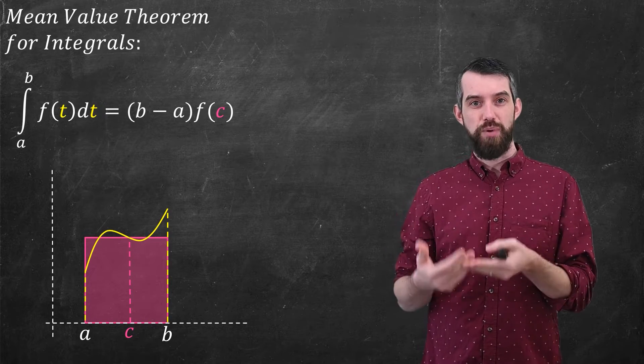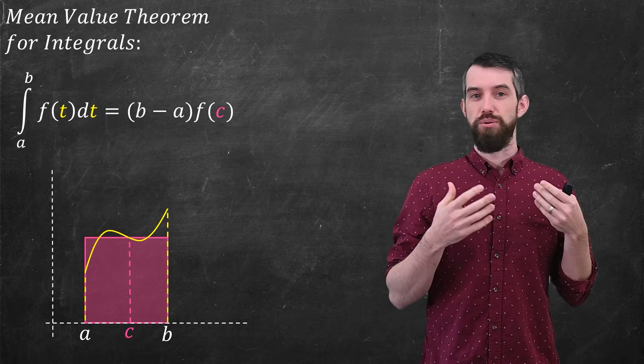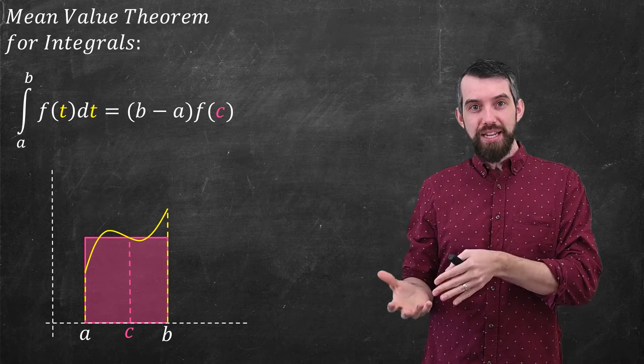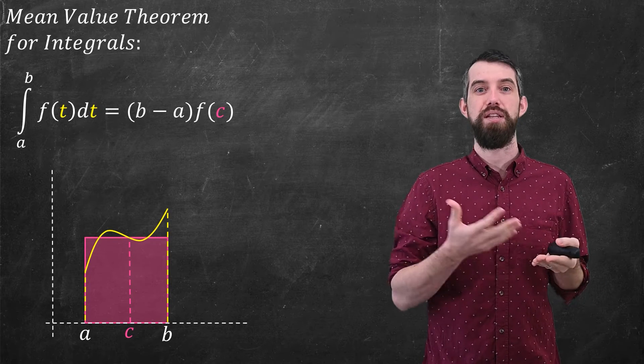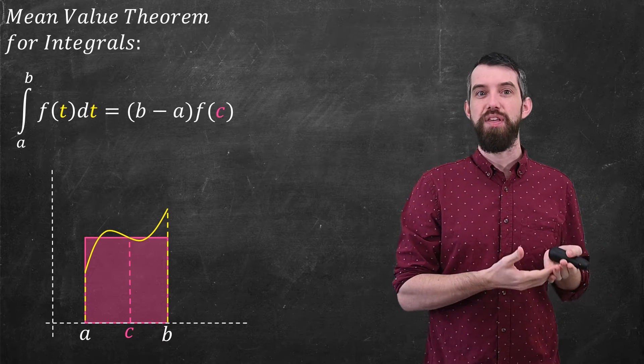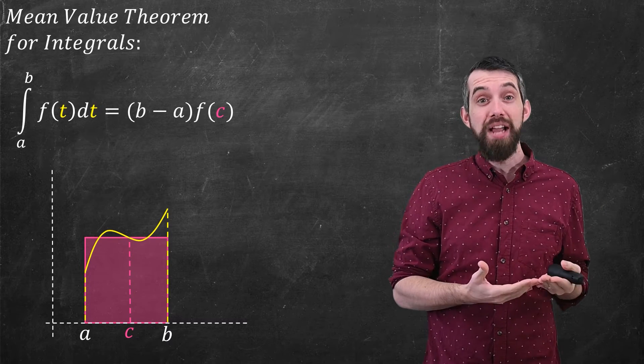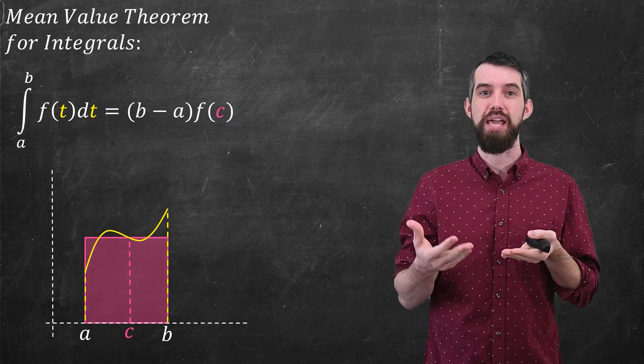Sometimes the pink rectangle is above the curve, sometimes it's beneath the curve. Nevertheless, the area of the rectangle is equal to the area under the curve, aka the definite integral. This seems quite reasonable to believe that it could be true, and indeed it is always true, provided your function f is nice. In particular, it needs to be continuous on the interval a up to b.